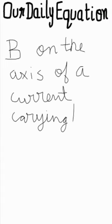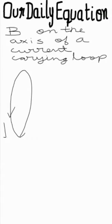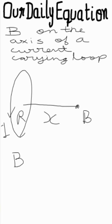Hello, our daily equation. Today's topic: magnetic field on the axis of a current-carrying loop. There is a loop of radius R carrying current I. At a distance X on its axis, if the magnetic field is B, then